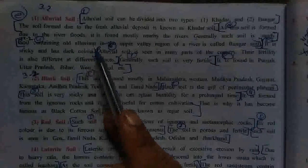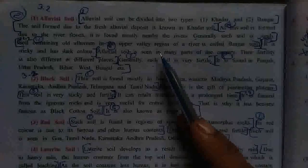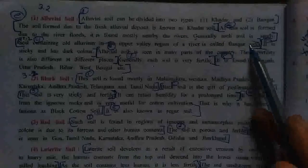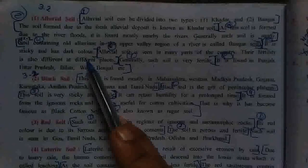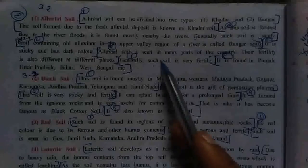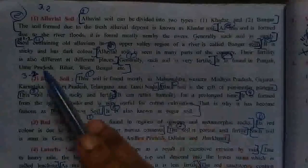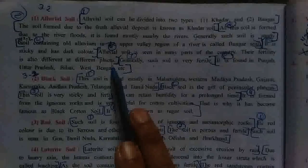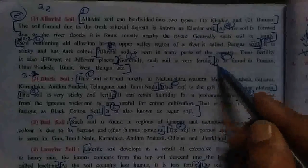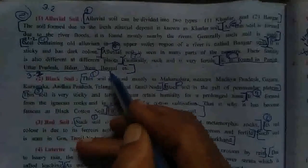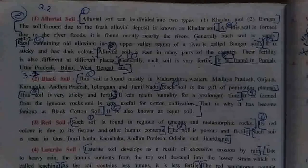Soil containing old alluvial in the upper valley region of a river is called bhangar soil. जो valley region का upper part होता है, वहाँ पे alluvial soil मिलती है उसको bhangar कहेंगे. It is sticky and has a dark color. यह sticky है और dark color है. Alluvial soil is seen in many parts of the country with different fertility at different places. Generally such soil is very fertile. It is found in Punjab, Uttar Pradesh, Bihar and West Bengal.